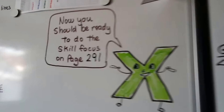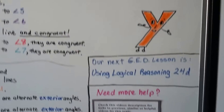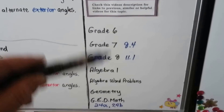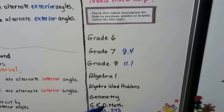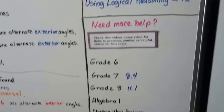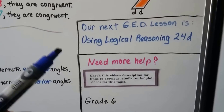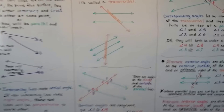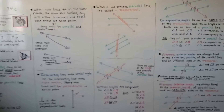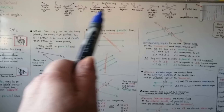From all this, you should be ready to do the skill focus on page 291. If you have some trouble, you can try watching the video again, or go to one of these links — the grade 8 math one explains transversals and alternate interior and exterior angles. I've got the previous videos for this GED lesson. We're going to talk about using logical reasoning in the next video, lesson 24D — we'll actually use equations to find the degrees of an angle. Make sure you understand this part and took notes on all these new words: corresponding angles, alternate exterior angles, alternate interior angles, vertical angles.